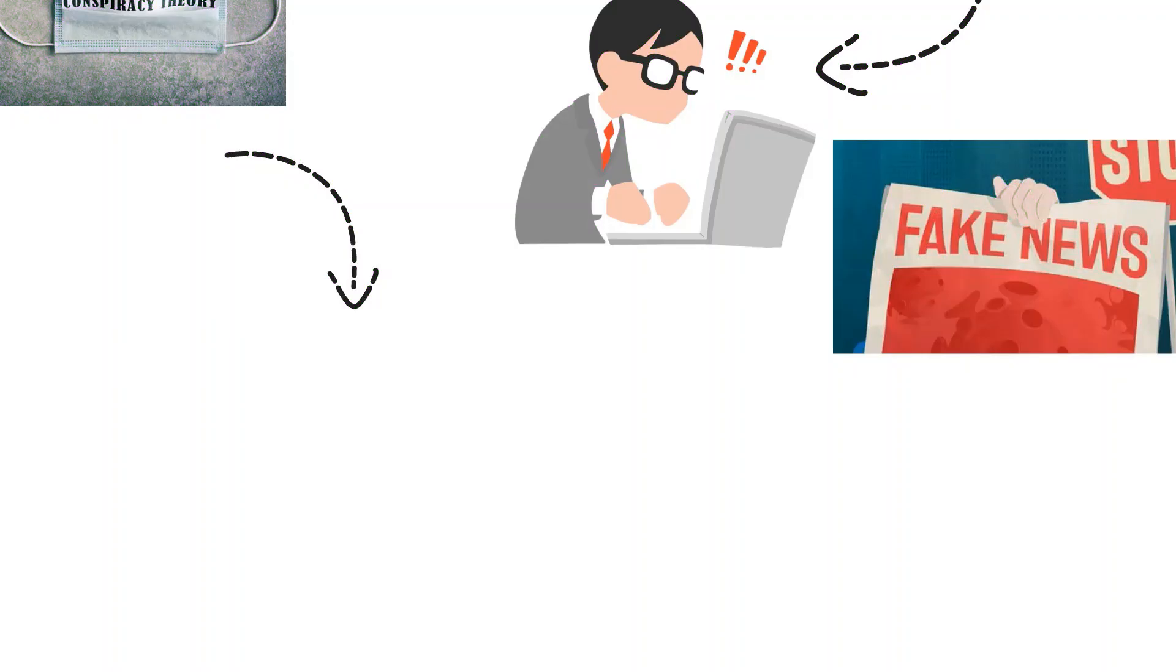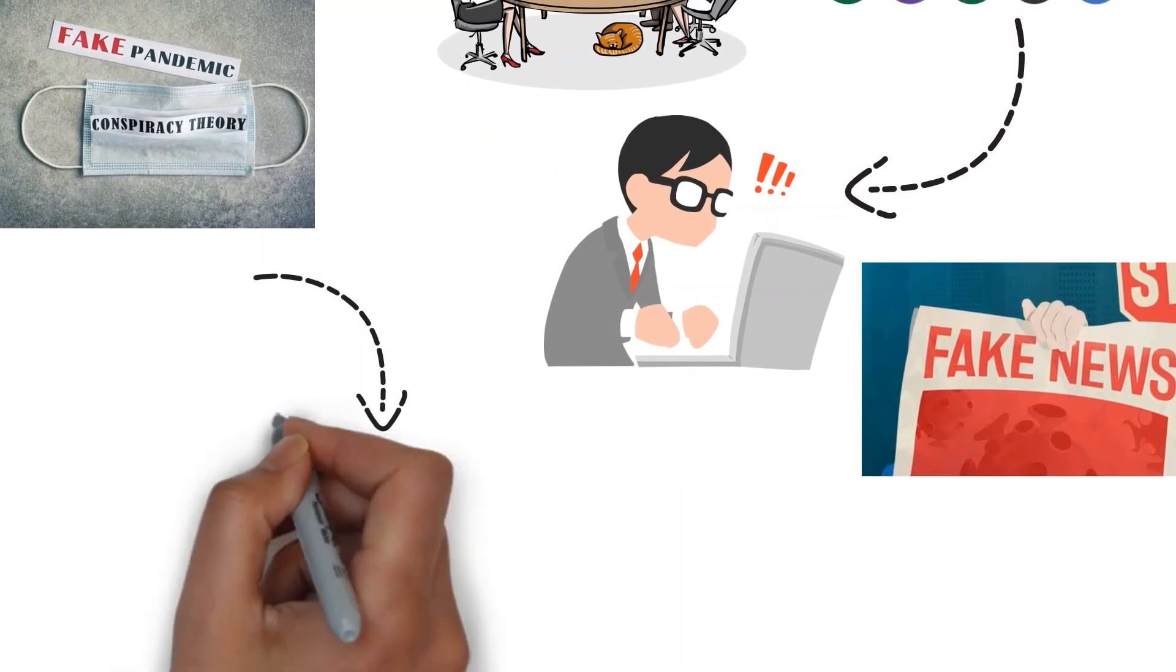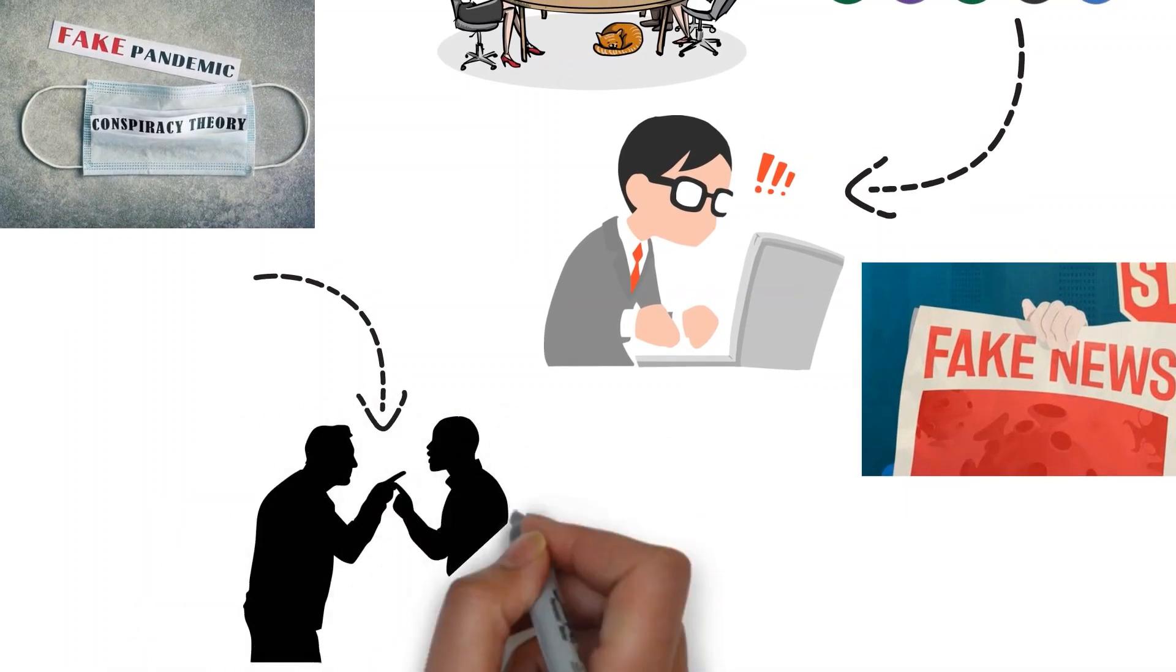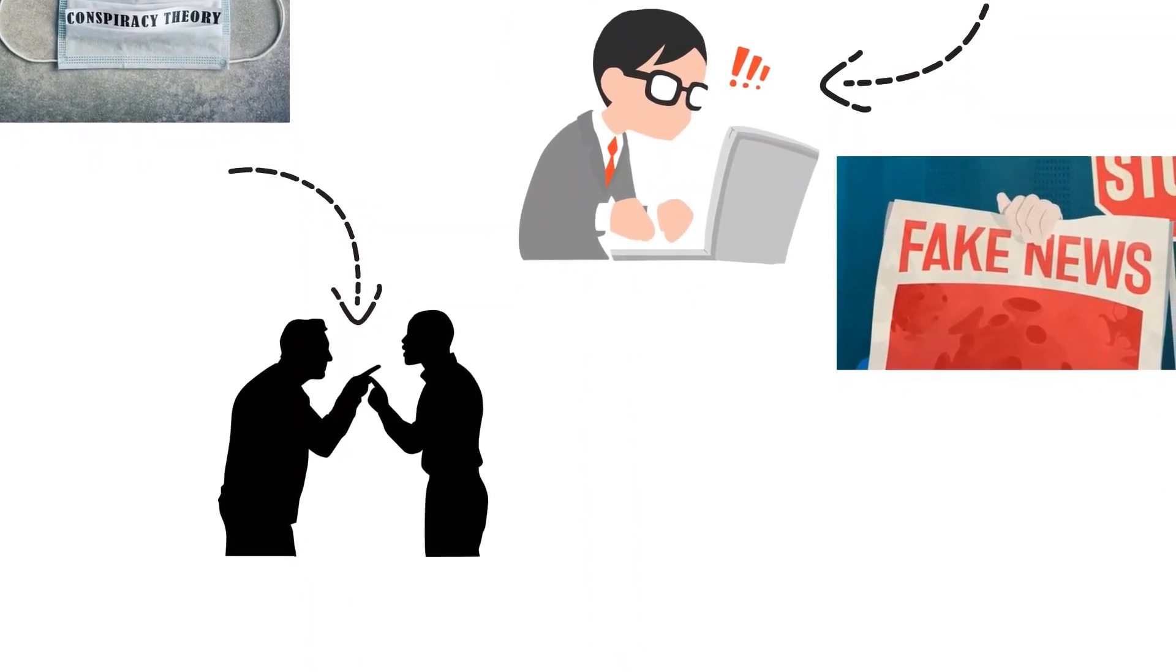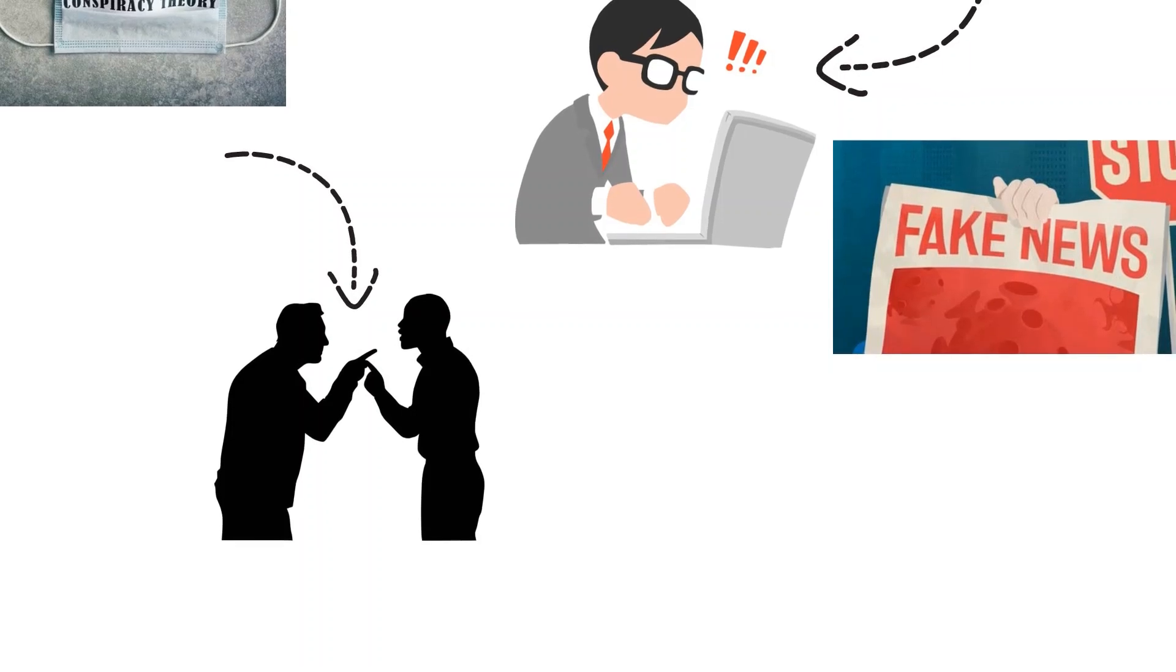When talking to somebody who firmly believes in a conspiracy theory, you should be aware that any argument challenging the conspiracy theory may be taken as proof that you are part of the conspiracy and reinforce the belief. They probably believe in more than one conspiracy theory. They will probably argue hard to defend their beliefs. So what can you do?